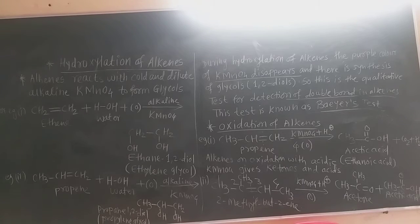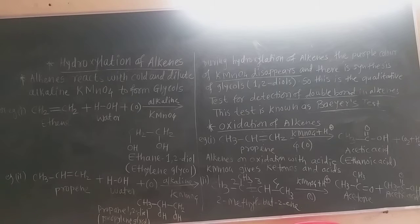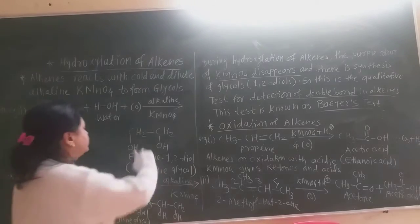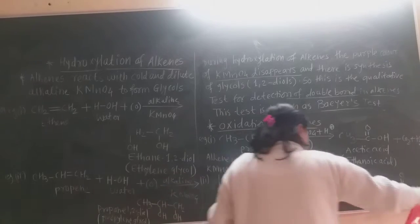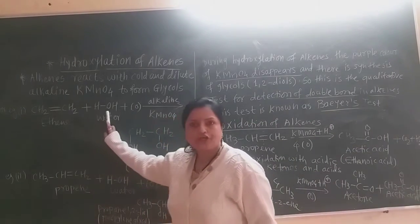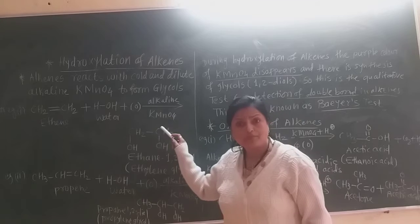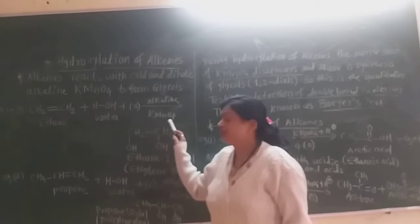It forms glycols. Glycols contain two hydroxyl groups in their molecules. So they are also called 1,2-diols or glycols. When alkenes react with KMnO4 in the presence of water, there is formation of nascent oxygen atoms. This nascent oxygen atom is formed from the alkaline potassium permanganate. This ethene then reacts with the water molecule in the presence of this nascent oxygen.